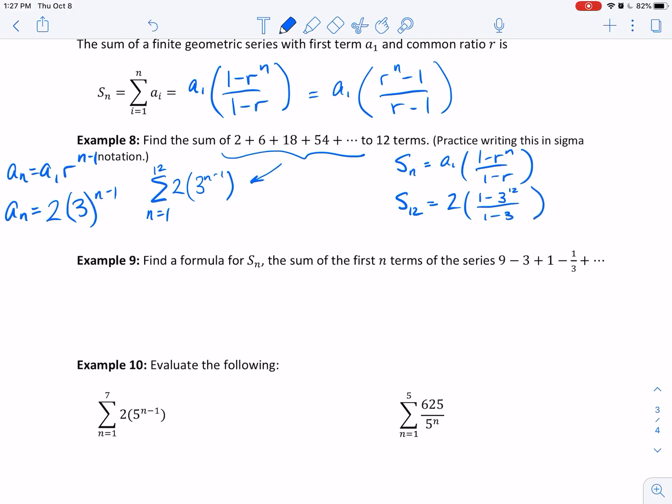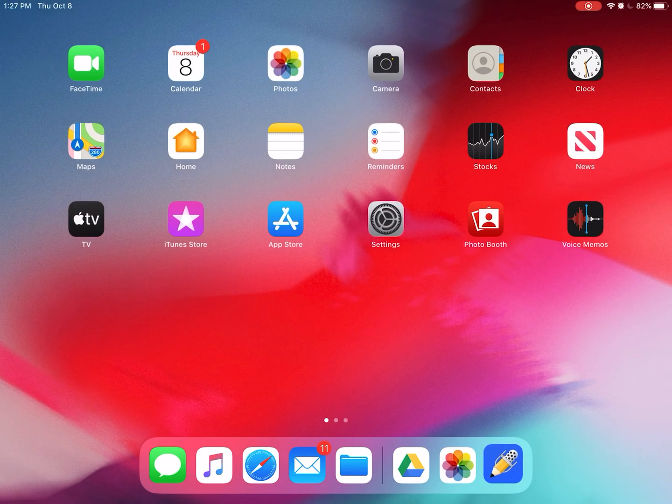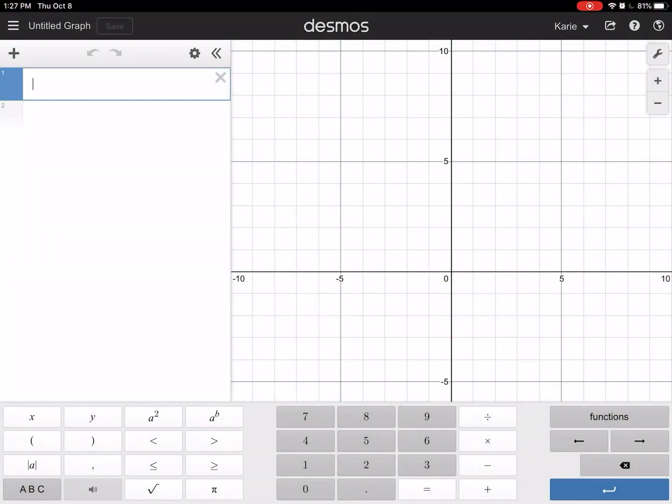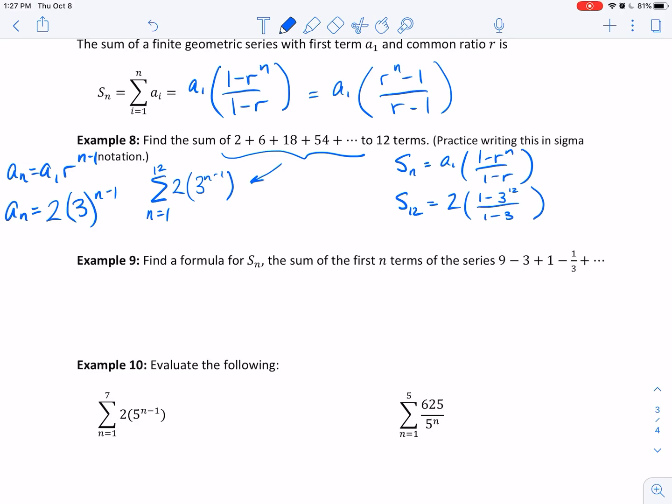I've been living by Desmos. It was 2 times, in parentheses, 1 minus 3 to the 12th power, close that parentheses, divided by 1 minus 3. That equals 531,440. The sum of those 12 terms, that seems pretty ridiculous to only have 12 terms add up to something that big, but these values are growing exponentially so they get big pretty fast. That's the answer to the first example.